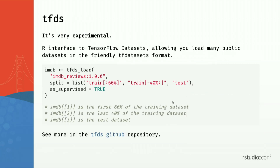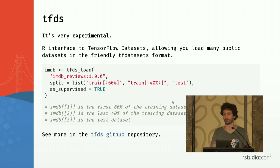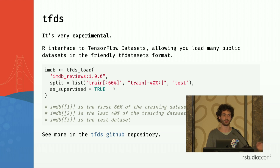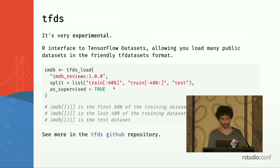There is TFDS, a new and experimental package, which allows you to load public datasets in the TensorFlow datasets format. For example, you can load ImageNet using TFDS without dealing with downloading the hundred gigabytes of images and figuring out how to preprocess everything. It provides a split API that lets you split your data into training, validation, and test directly. It's a nice package when you are learning new things and trying out your deep learning models.